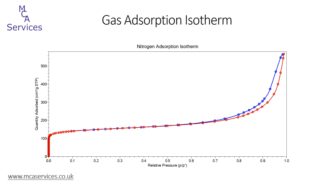We measure gas adsorption isotherms in order to investigate the porous nature and characteristics of a sample — for example, the pore size, the pore volume and the pore area, as well as the surface area.